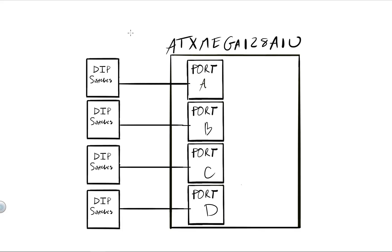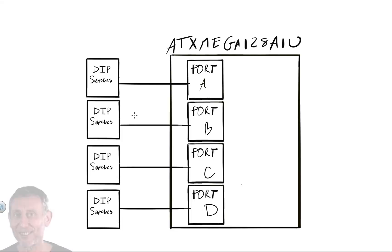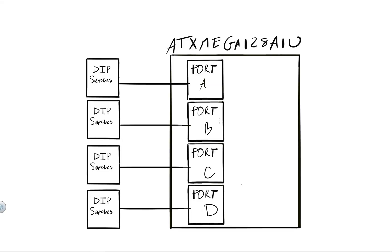This current solution is not very scalable. If I wanted to grow from four sets of DIP switches to, say, 37 sets, I would not have enough ports within my microcontroller to connect each set to a respective port. There is a certain limit beyond which this does not scale, so we need a better solution.